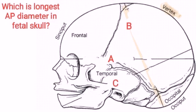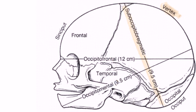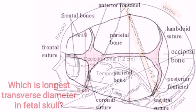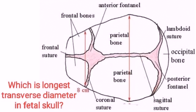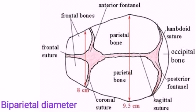Which is the longest AP diameter in the fetal skull? Answer: A. Which is the longest transverse diameter in the fetal skull? Biparietal diameter.